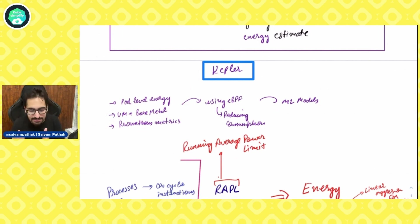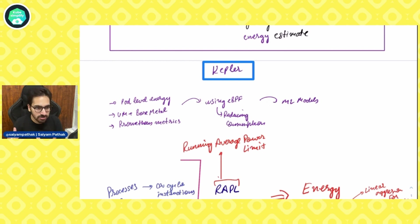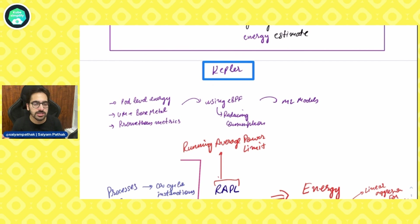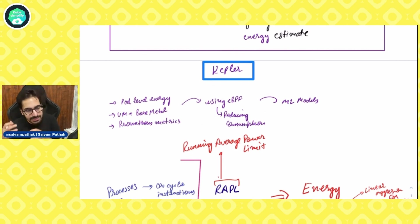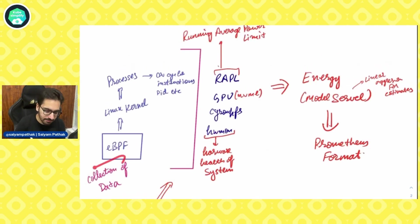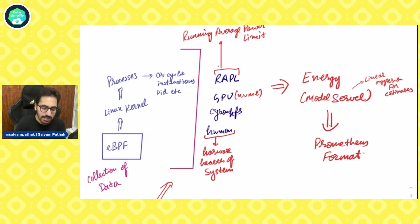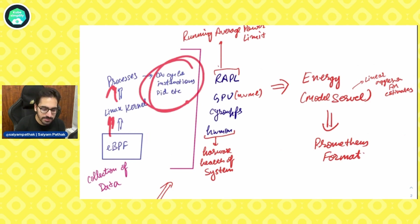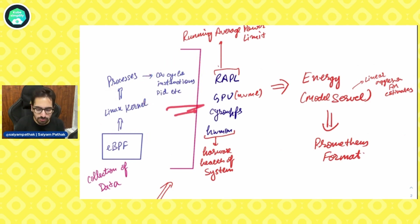That is one layer. The next layer is using eBPF to read the consumption and get all the metrics. The next layer is feeding into the machine learning model — the machine learning models will process the generated metrics and get a meaningful result. In the Linux kernel it measures all the processes: CPU cycles, instructions, PIDs, all that stuff. Then it goes to the next layer, which is aggregation.